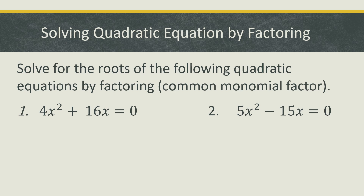To solve this kind of equation, first we need to get the factors of each term. The common factor of the numerical coefficients 4 and 16 is 4, and the common factor of x² and x is x. After getting the common monomial factor 4x, we divide each term: 4x² ÷ 4x = x, and 16x ÷ 4x = positive 4. We equate the expression to zero, giving us the two factors: 4x and (x + 4), both equated to zero.